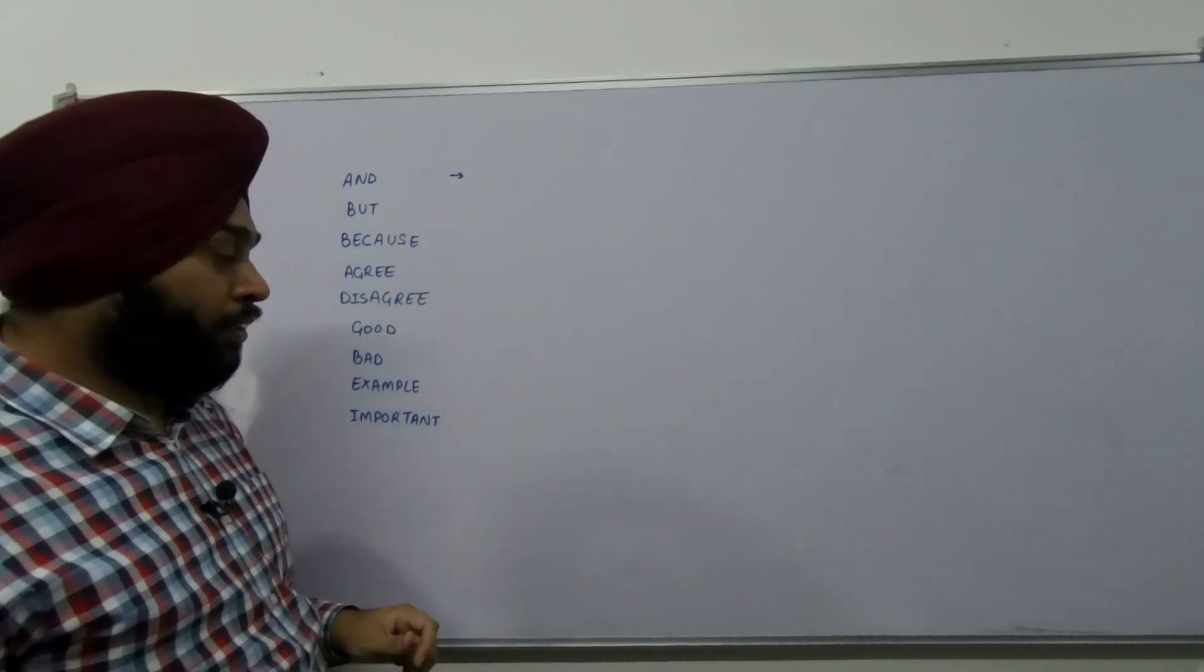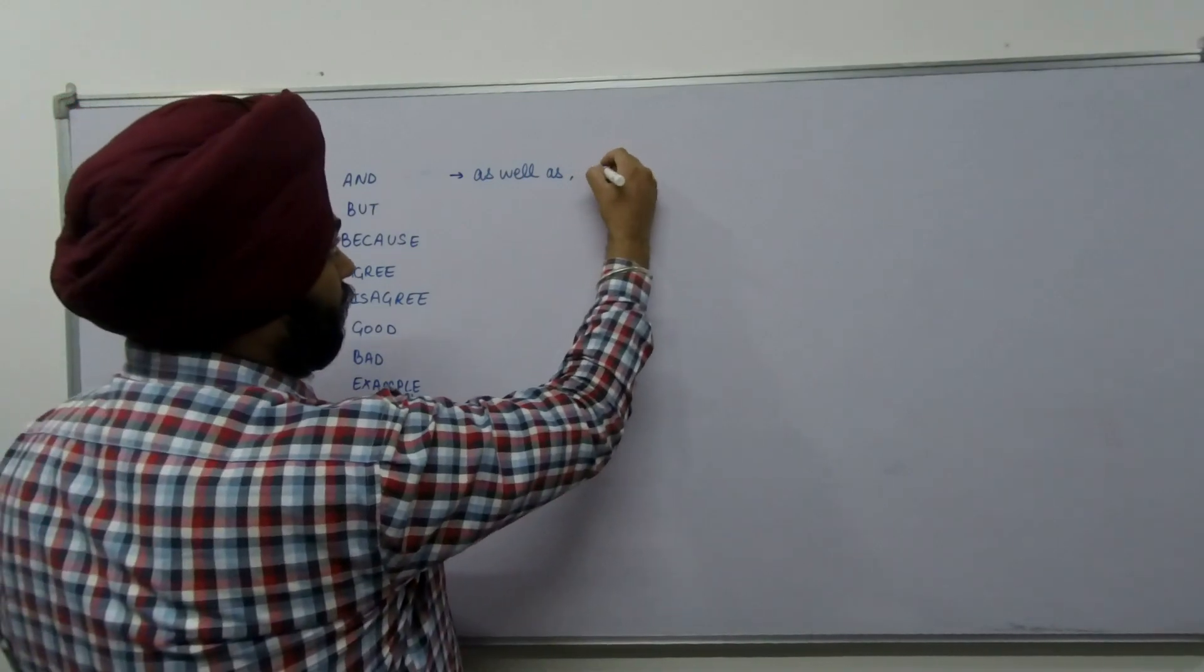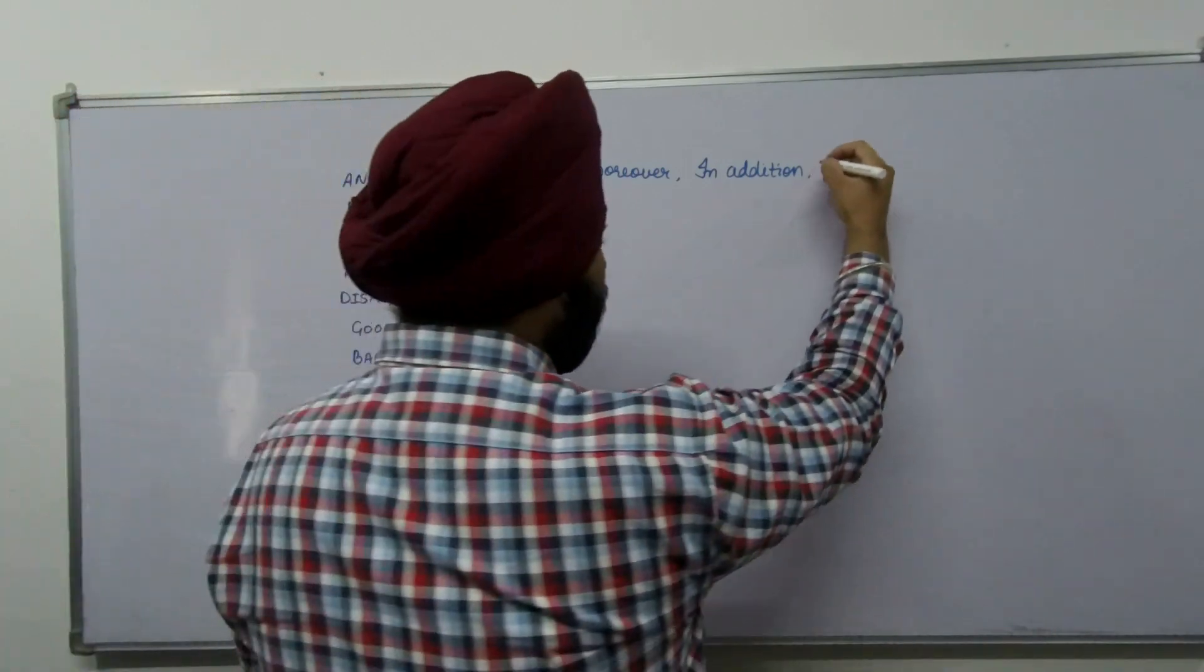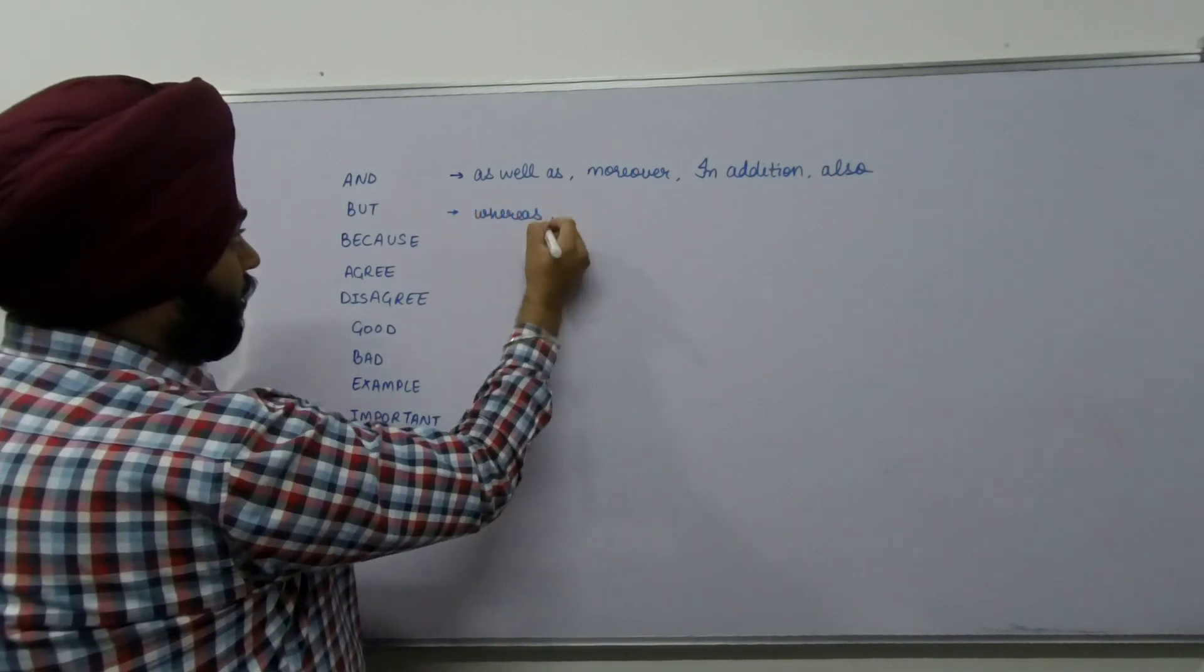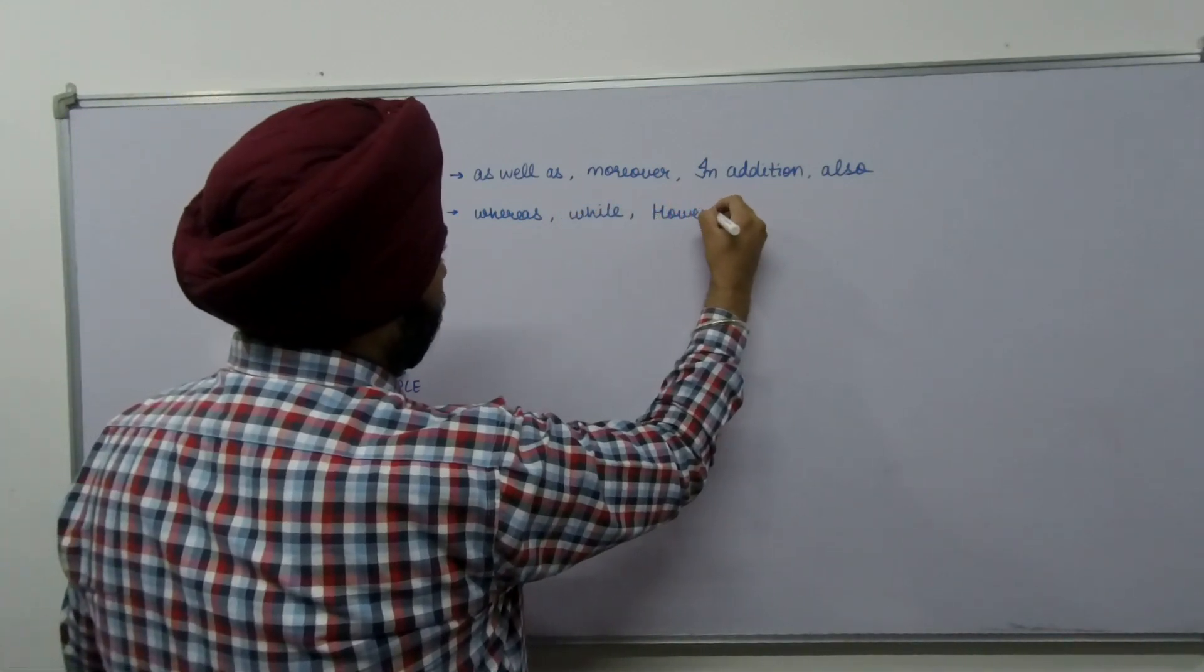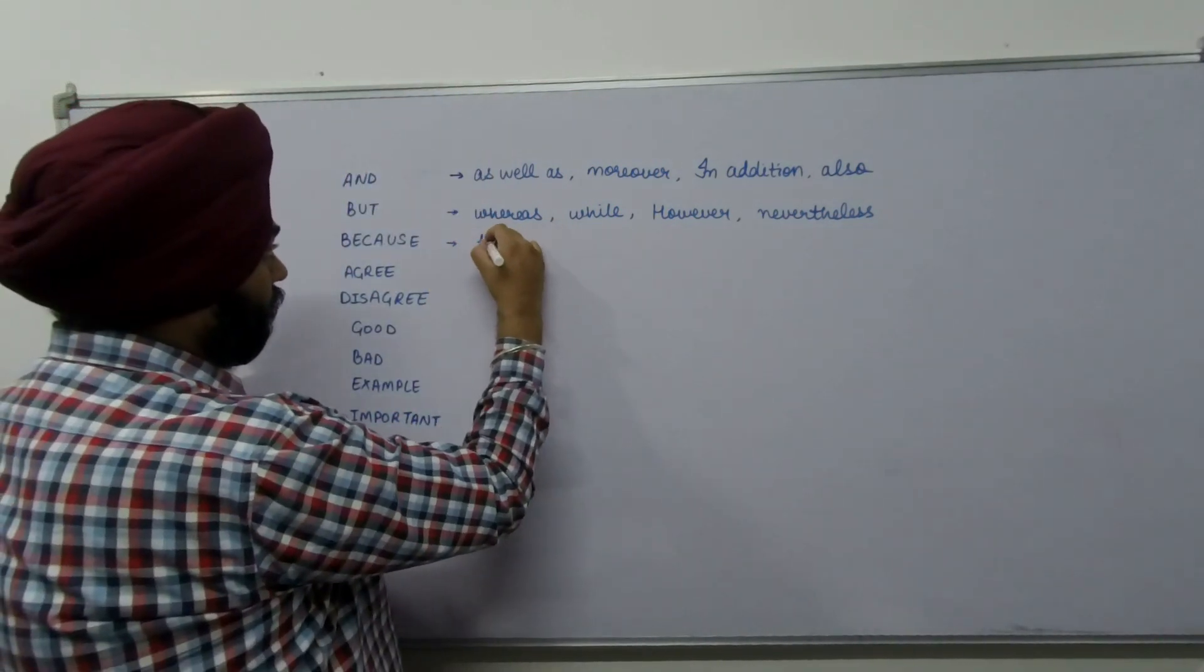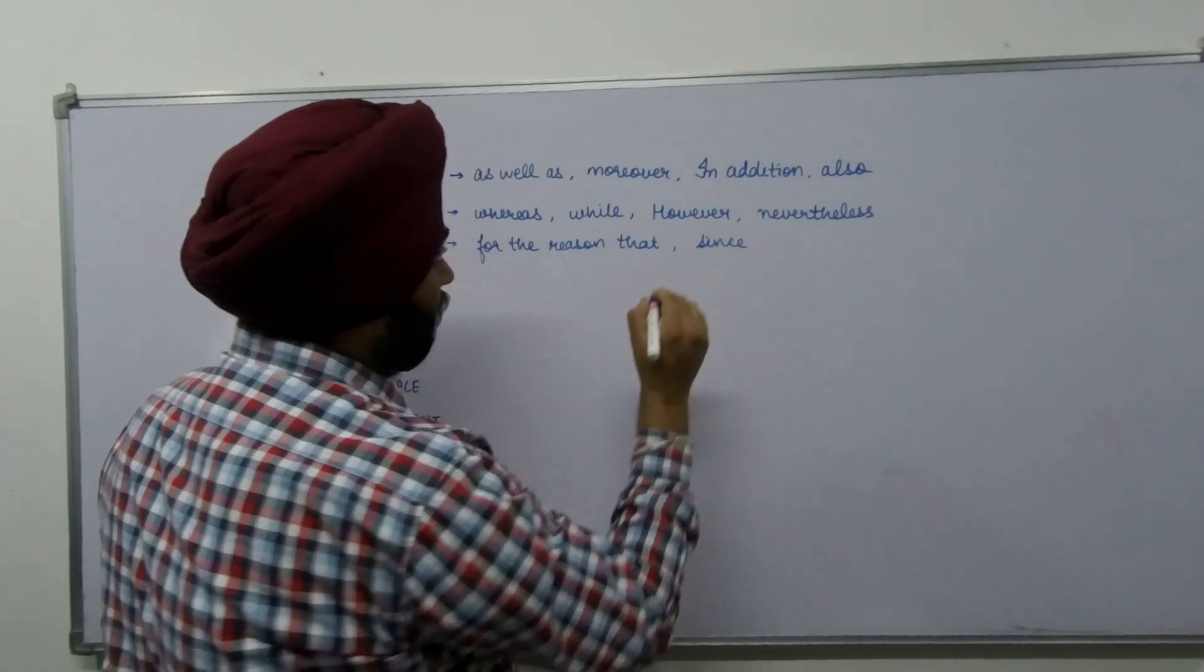AND is a very common word, a connector. In place of AND, you can use as well as, moreover, in addition, and also. BUT - you can use whereas in place of BUT, while, however, and nevertheless. BECAUSE - for the reason that, and since.